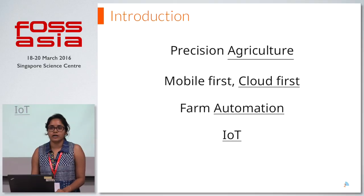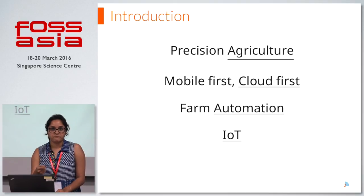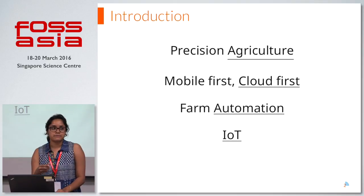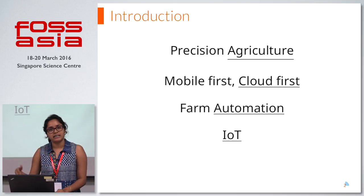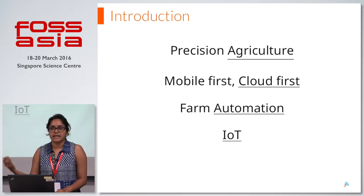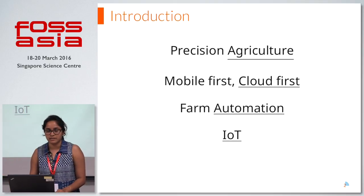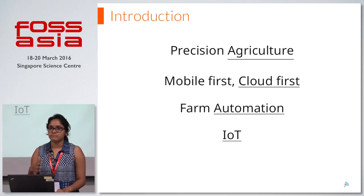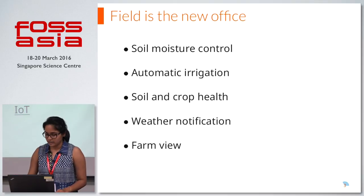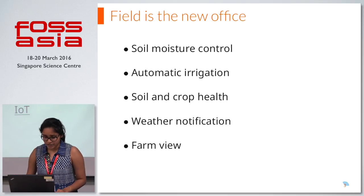This involves operating the farm fields through your mobile phone. The data is being collected into the cloud, which can later be used for certain AI predictions for a better farming experience. It is a farm automation system and IoT application.